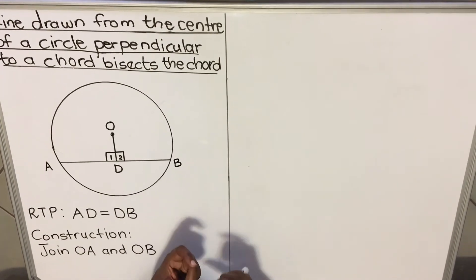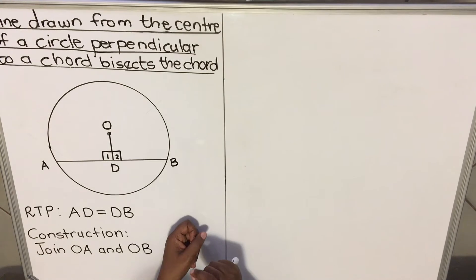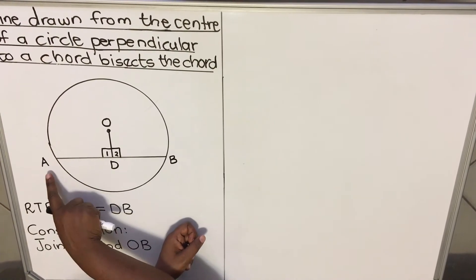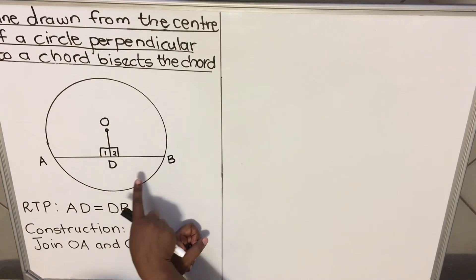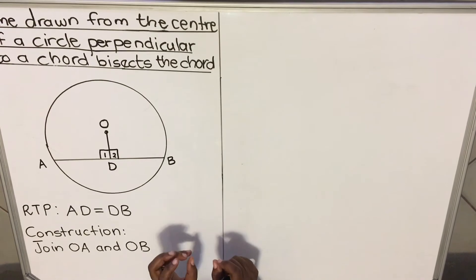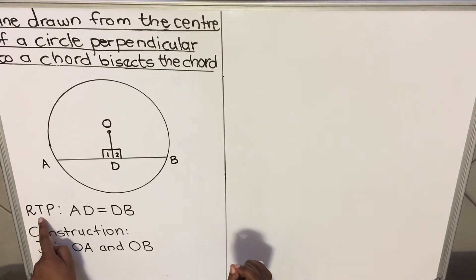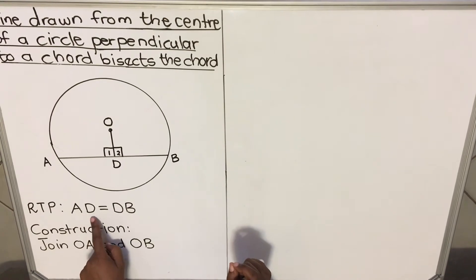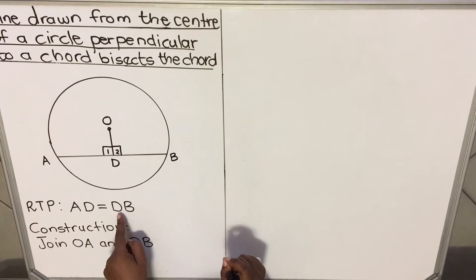So if you get that in a drawing, what does it do? They say it bisects the chord. Bisect means it cuts the chord equal. It means AD will be equal to DB. This is what you're trying to prove in this theorem. So when you are proving a theorem, you need to write what it's required to prove. You're required to prove that line AD is equal to line DB.